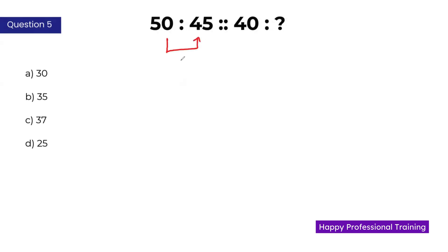The second number is found by subtracting the first number with 5. So 50 minus 5 is 45. Similarly, 40 minus 5 would be 35. B is the correct answer.